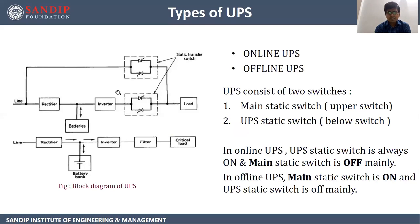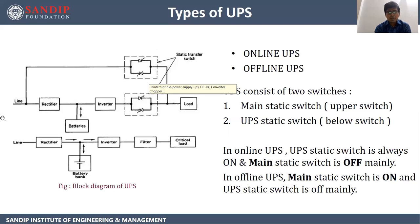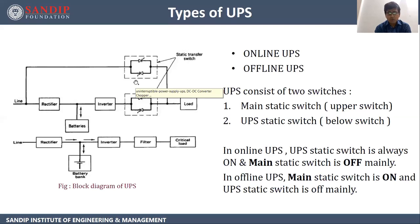In case of Offline UPS, the UPS static switch is off and the main static switch is on. So mostly this line supply directly feeds the load through this switch. Simultaneously this line supply is fed to the rectifier, which converts AC into DC, and DC is stored in the batteries. If any power failure takes place or there is a problem in the line supply, the main static switch will get off and the UPS static switch will get on. Then the power or DC stored in the battery is fed to the inverter, which converts DC into AC, and that AC feeds the load.